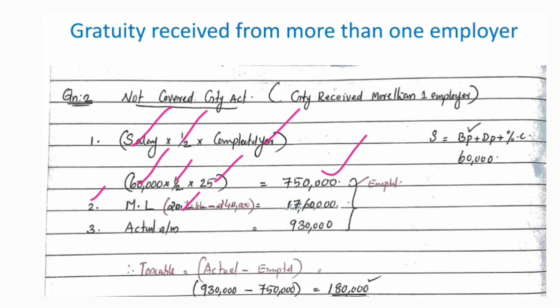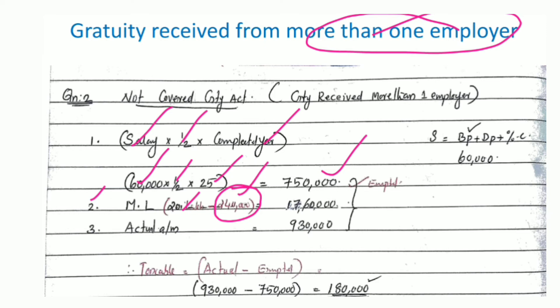If there are more than one employer, you need to consider the combined ceiling limit. The ceiling limit amount comes to around Rs. 20,00,000.